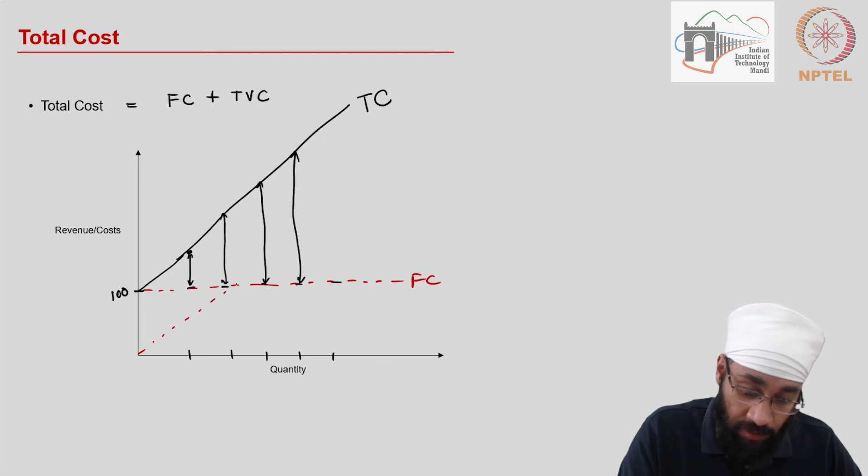Essentially, this is the fixed cost and this is the variable cost. And the total variable cost curve is going to be parallel to the total cost curve because the changes in the total cost totally depend upon the total variable cost. Fixed cost is fixed.